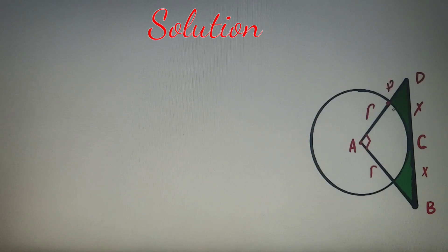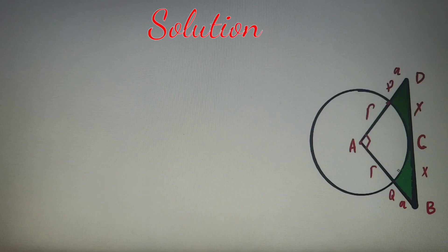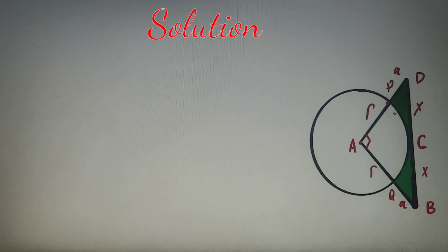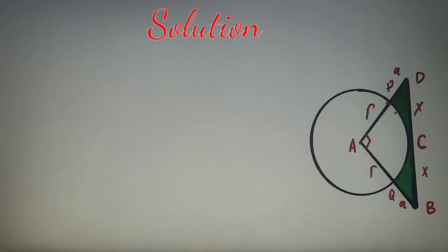If we consider the two symmetric points as P and Q respectively, we can say both distances are equal to a variable a, so PD equals QB equals a. This is because the figure is symmetric. To find the shaded area, we can first calculate the area of the triangle, then subtract the area of the quadrant.